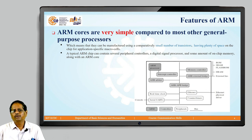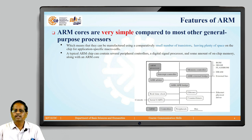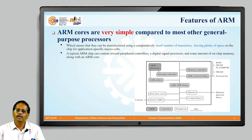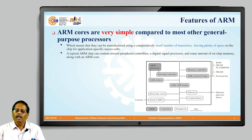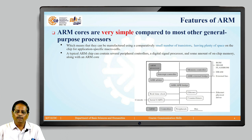ARM cores are very simple compared to most other general purpose processors. The general purpose processors being compared here are Intel processors like the 80186, 80286, 386, 486, and Pentium. In comparison with these Intel processors, ARM cores are very simple. They are simple because they follow the reduced instruction set philosophy.